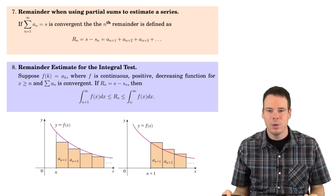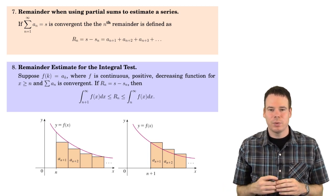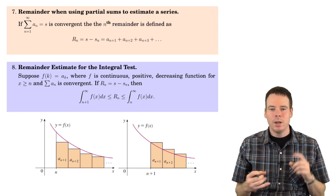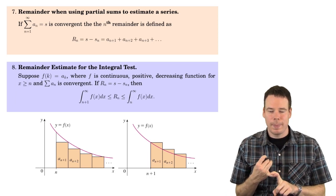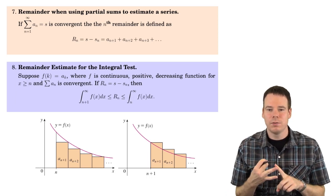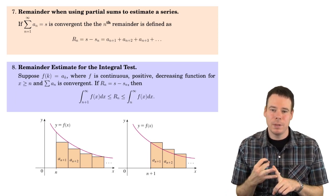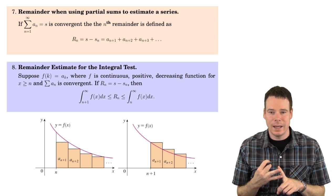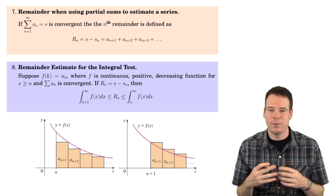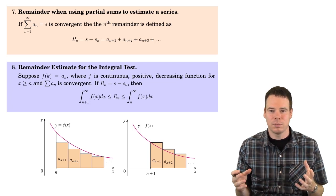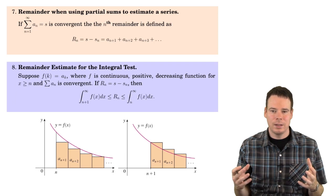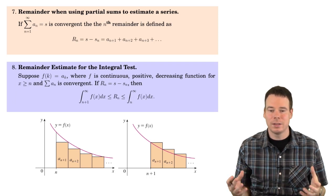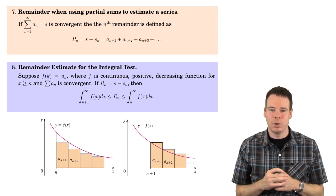So in this last topic, we're going to come to this question of: suppose you know a series converges — what does it converge to? I may not be able to find that exactly, but maybe if I just add up finitely many terms of the series, I can get a good estimate of what it approaches.